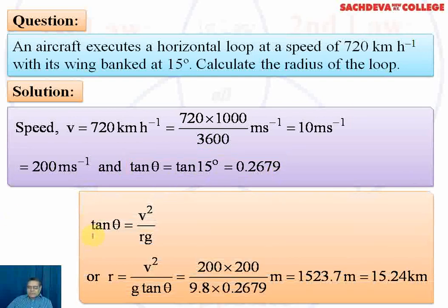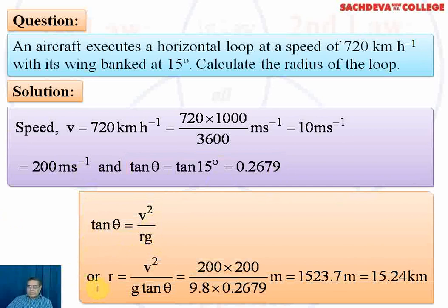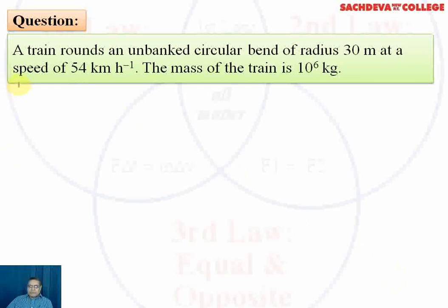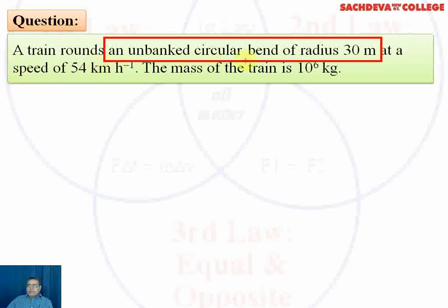Using the formula tan θ = v² / rg, we make r the subject: r = v² / (g × tan θ). Computing: v² = 200 × 200 = 40000; g = 9.8; tan θ = 0.2679. The radius of the loop is calculated to be 1523.7 meters, which is then converted into kilometers.